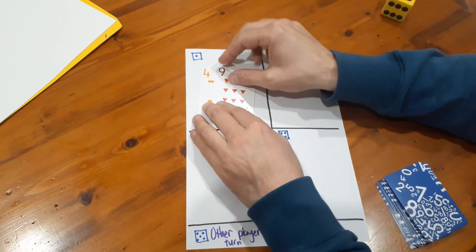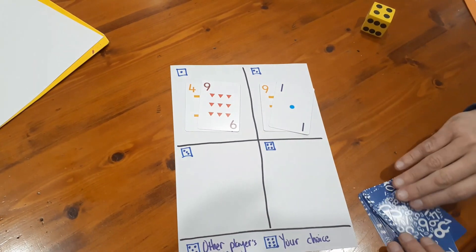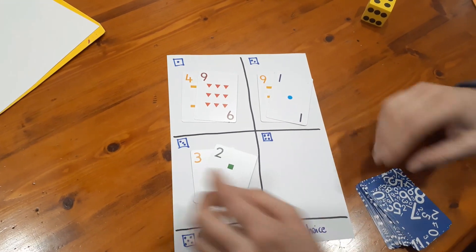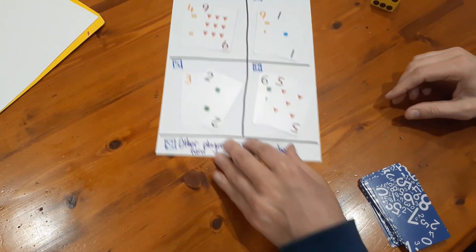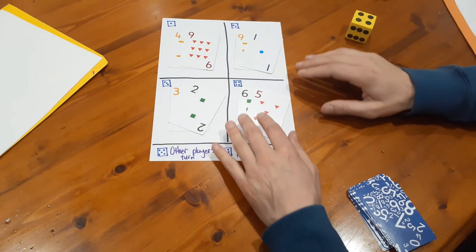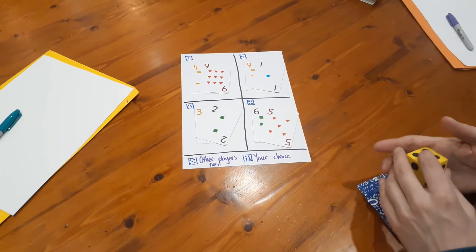Now to get the game started we just need to deal two cards into each of the boxes to make a two-digit number. So we've got 49, 91, we have 32, and we have 65. And then whoever's turn it is Nash would you like to start?